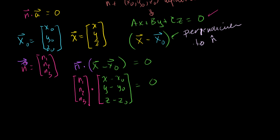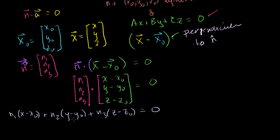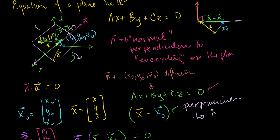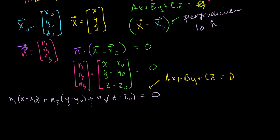You might not completely recognize it, but with a little algebra to clean it up, this is the form ax plus by plus cz equals d. This is the general form for a plane in R3 — a plane is just a linear surface in R3.